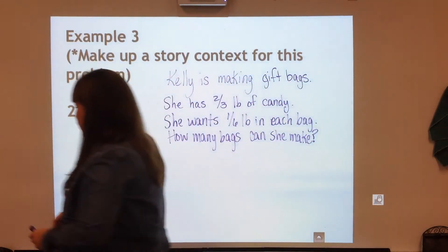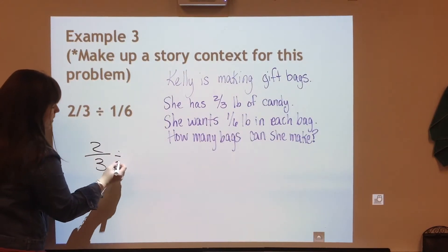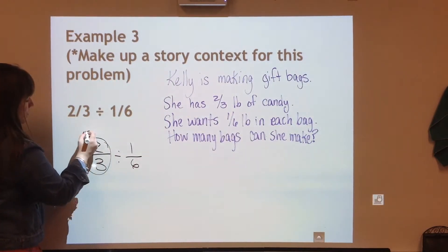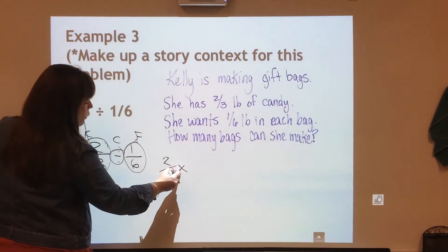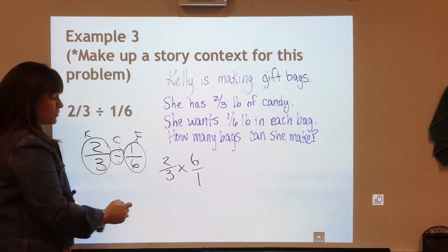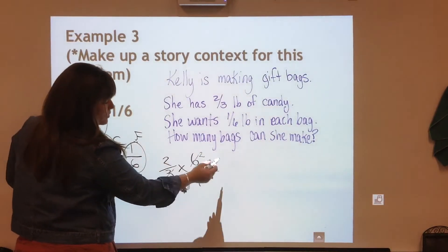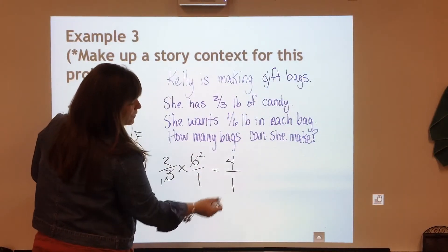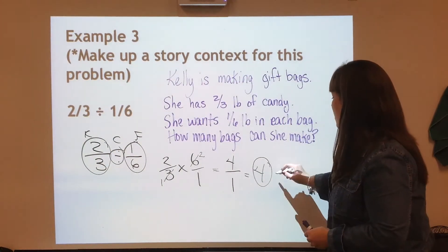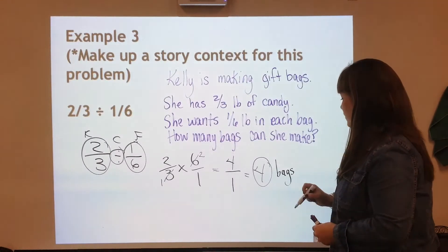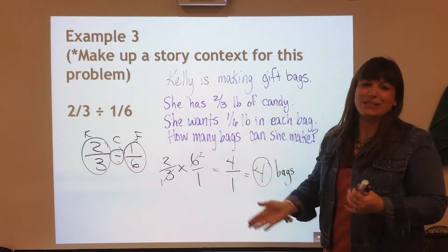So now we're going to solve and we have 2/3 dividing by 1/6. We're going to keep, change, and flip. So we will have 2/3 being multiplied by 6. I can do the divide and simplify first trick. Now I have two times two, which is four. One times one, one, which is just the whole number four. I do need to put the context with this. What am I talking about? I'm talking about, in my case, four bags or four gift bags. So hopefully you got four and then whatever your context is.